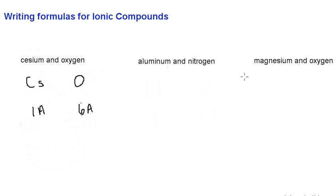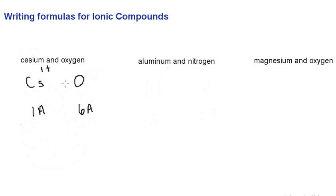You need a periodic table for these examples. Cesium is a metal, which means it likes to lose electrons. How many electrons is cesium going to lose? Cesium is in group 1A, which means it will lose one electron and become 1 positive, because it's losing one electron.